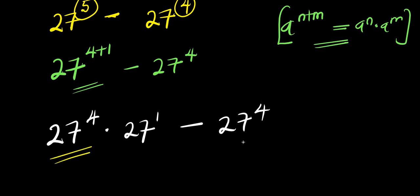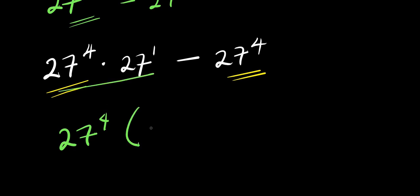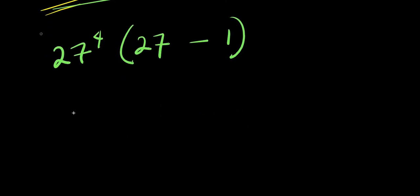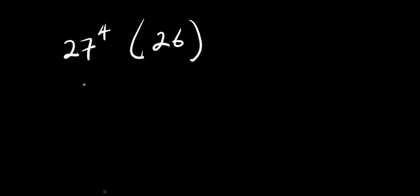So we have 27 power 4 here and 27 power 4 here — we can factor that out. We have 27 to the power of 4 times 27 minus 1. So from here I have 27 power 4 times 27 minus 1, which is 26. So we need to find the value of 27 power 4 times 26.